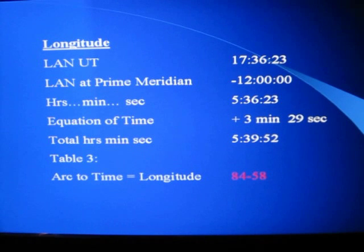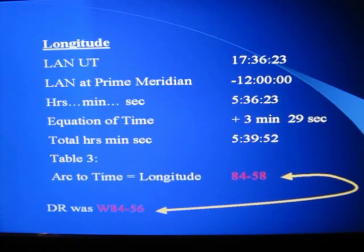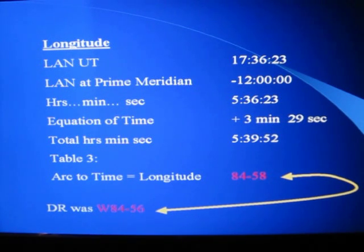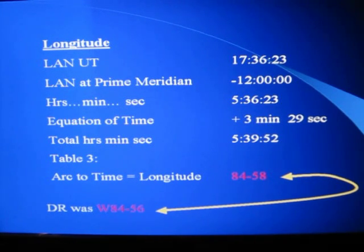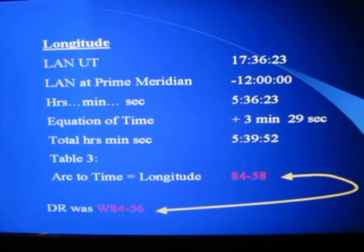What we want to do now is compare our calculations from our observation with our DR position, and we see that it's very close — only 2 minutes off, which corresponds to approximately 2 miles. That is very good, though I have to confess I'm generally not that close. It's hard to get very close with this method, unfortunately.